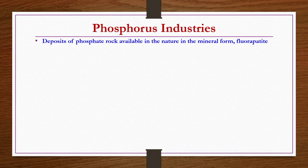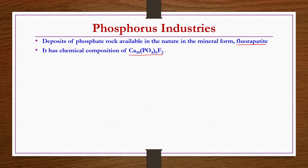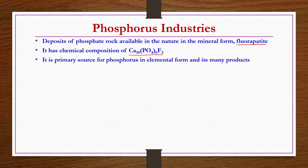The phosphorus industry's basic raw material is phosphate rock. This phosphate rock is available in nature in mineral form known as fluorapatite, having the chemical structure Ca10(PO4)6F2. It is the primary source for phosphorus in elemental form and its many products, including phosphoric acid, P2O5, and other mixed chemical fertilizers.